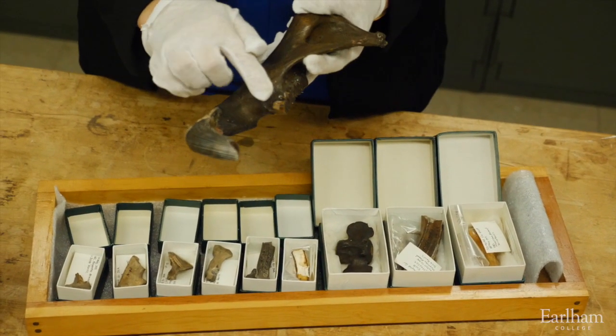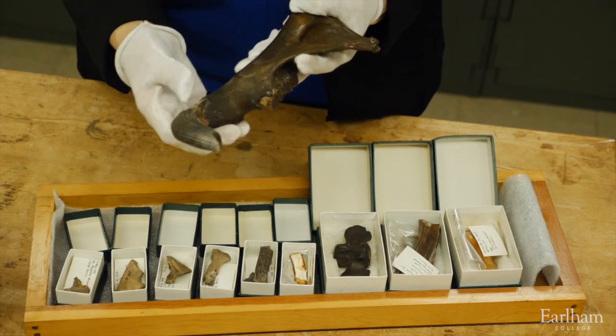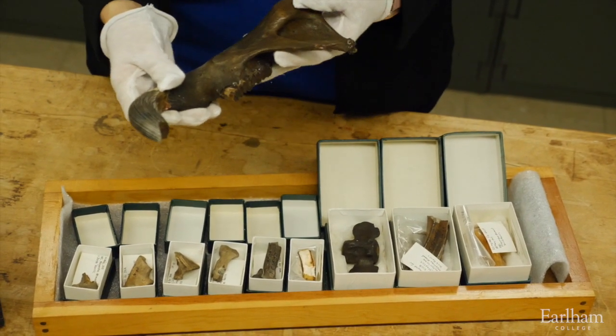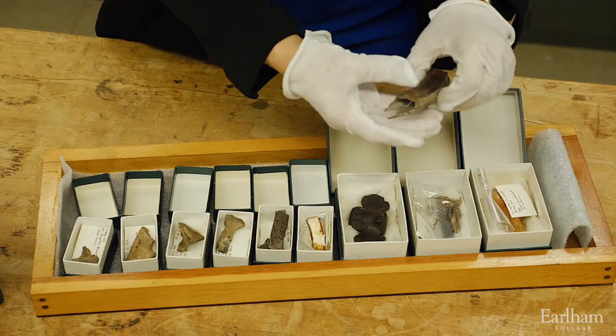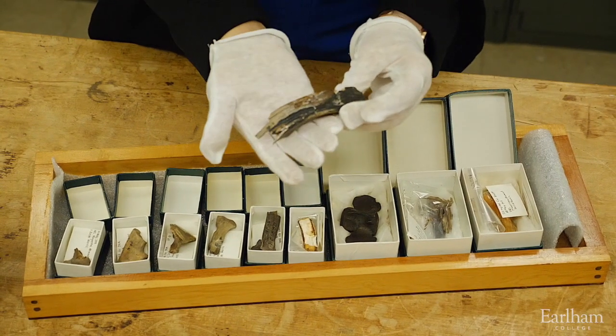Since DNA degrades with exposure to UV light and changing temperature and humidity, we sample from parts of the fossils that would be most likely to protect DNA. That is, within the densest bones or teeth protected by enamel.